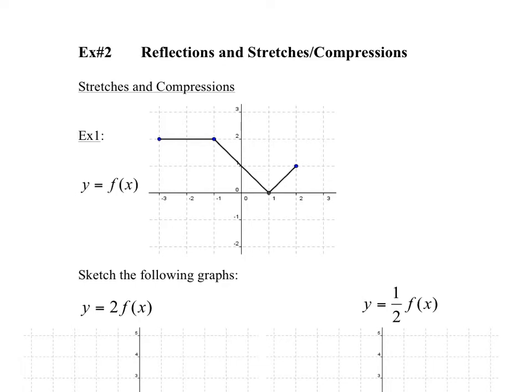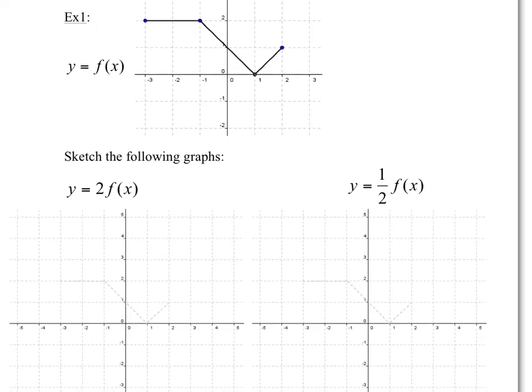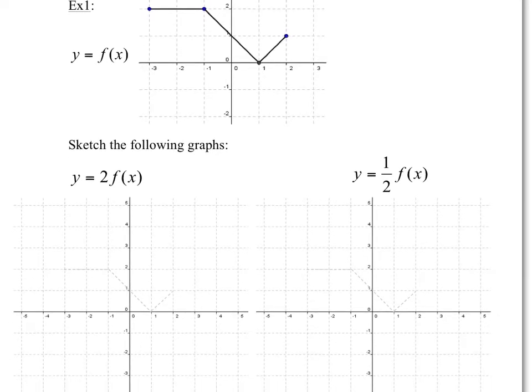Let's start with the first couple. We're going to take this as our original graph and we're going to sketch 2f(x). You guys might remember that y is equal to f(x), so basically y and f(x) are the same. So if you have 2 times f(x), you're basically multiplying the y-values by 2.